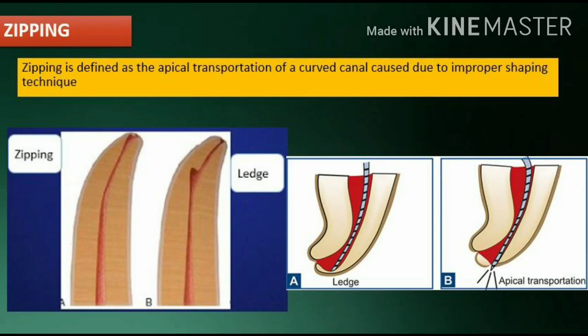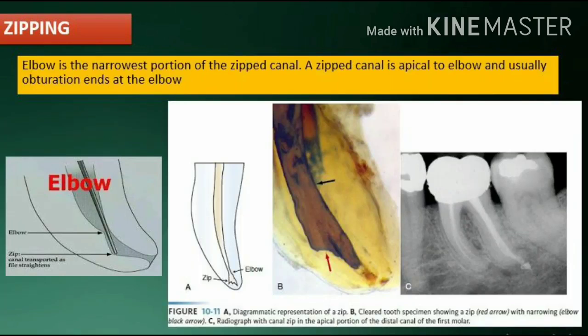Zipping is defined as the apical transportation of a curved canal caused due to improper shaping technique. Ledge can occur anywhere in the canal, but zipping occurs at the apical third of the canal without the transportation of the apical foramen. The elbow is the narrowest portion of the zipped canal.